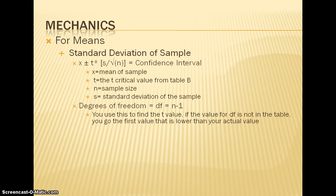So in the table, if it lists the df values as 5, 10, 15, 20, but your degrees of freedom that you found was, let's say, 26, then you would go to the value of 20 in the table in order to find your appropriate t value.